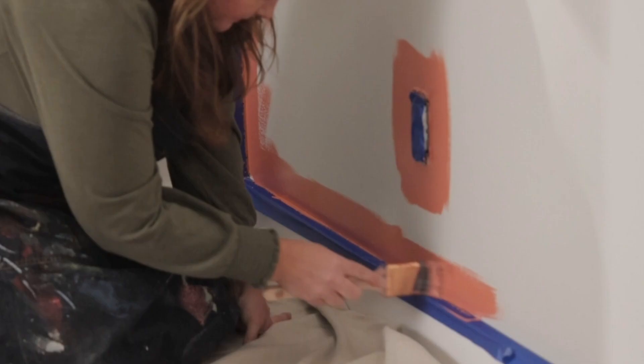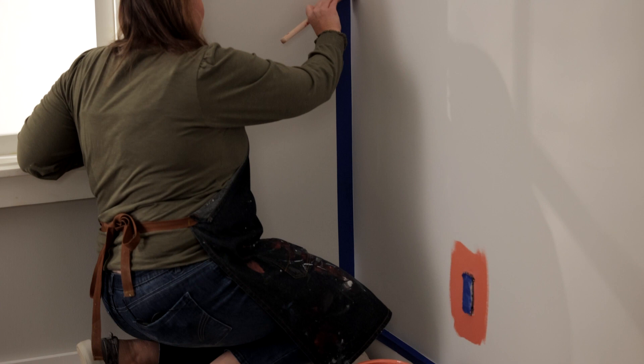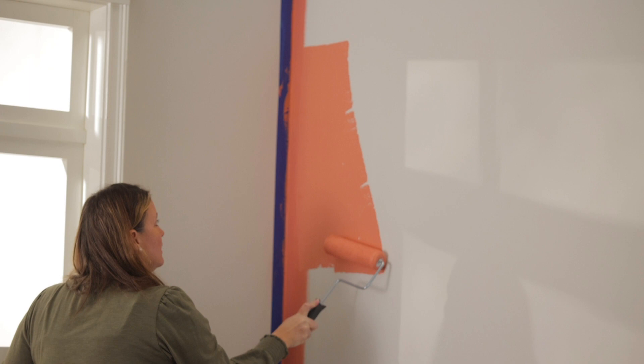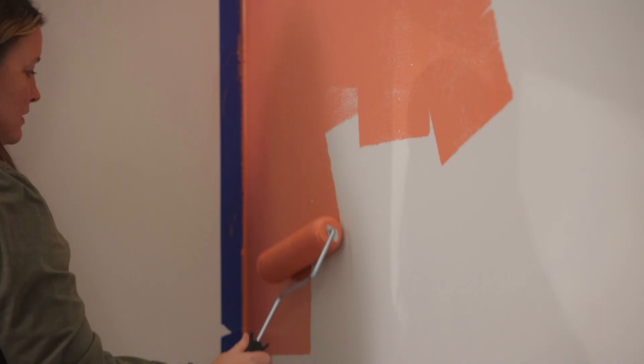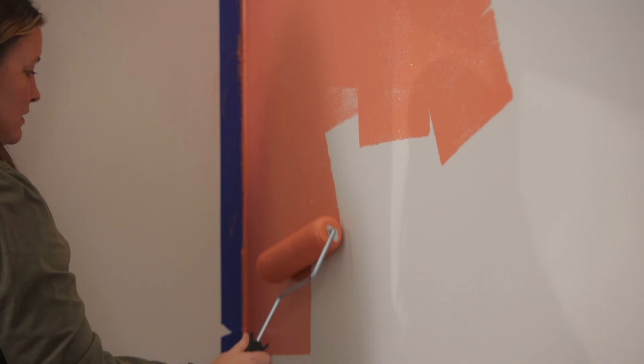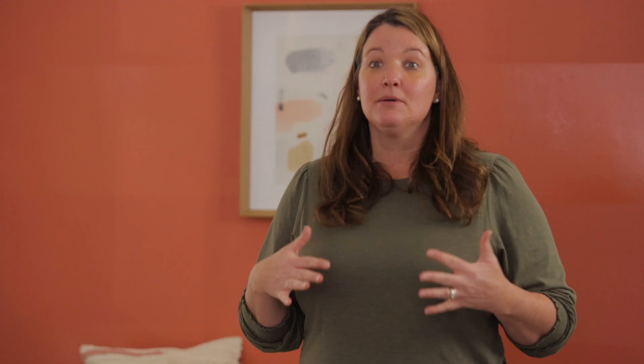Start by using a two inch synthetic brush and apply the paint to the trim all the way around the room. Then take a medium 3/8 snap roller and paint the entire wall. It's best to roll the paint in a W formation like this. It's also important that the base coat dries for at least 48 hours before you start working on your stripes.